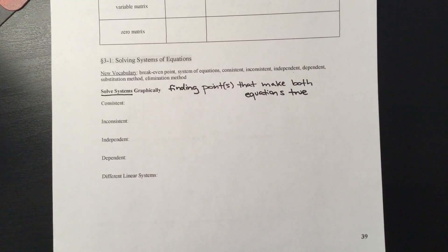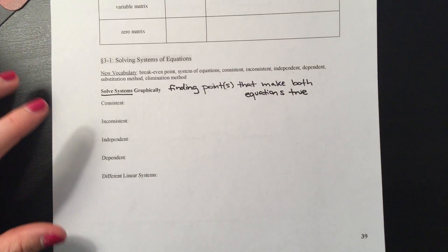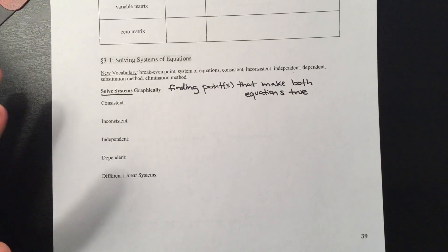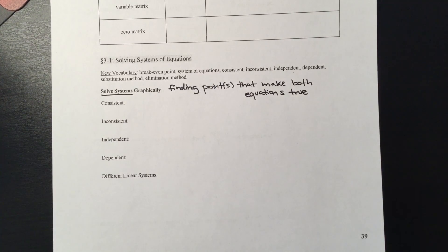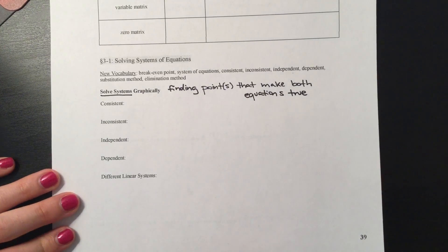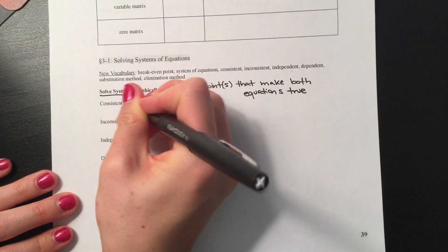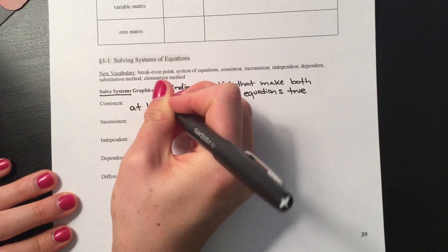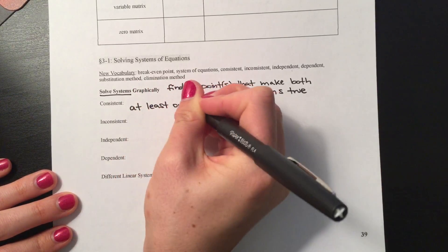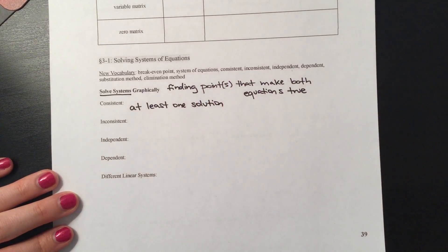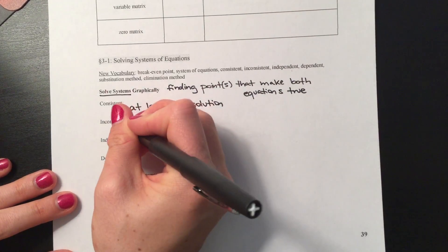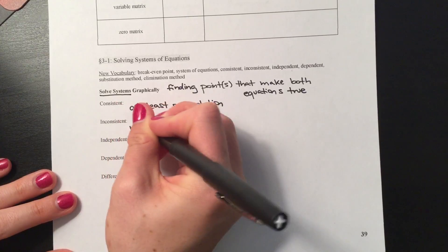Finding the solution could mean multiple different things. We've got four different possibilities, different definitions for the types of systems we could be dealing with. We could have a consistent system — a consistent system has at least one solution. Whereas an inconsistent system has no solutions.